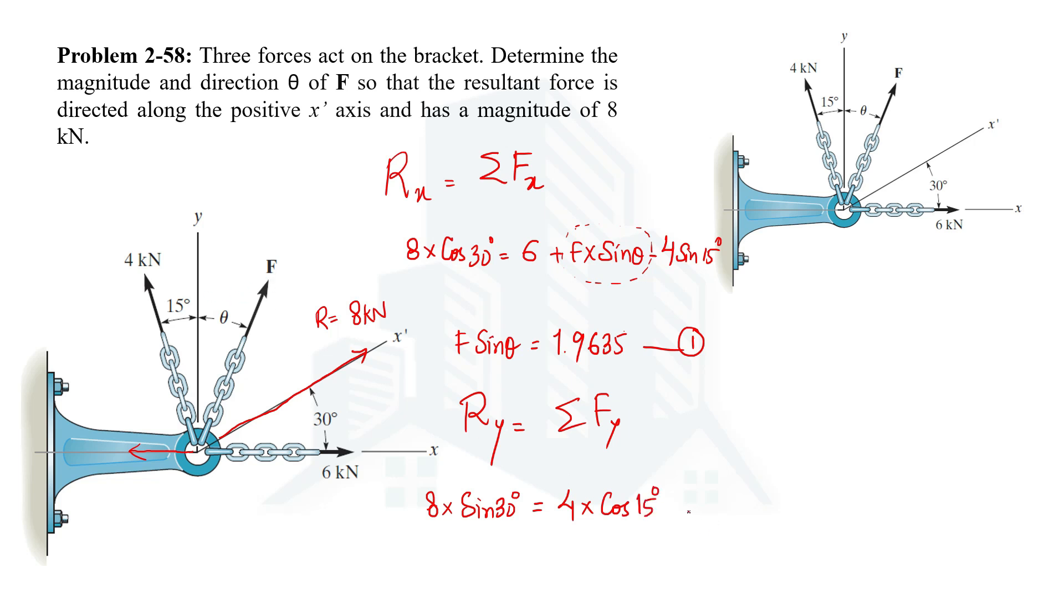The y component of F would be positive F cos theta. So we can simplify for F cos theta. On simplifying, F cos theta would be equal to 0.1363. This will be equation number 2.